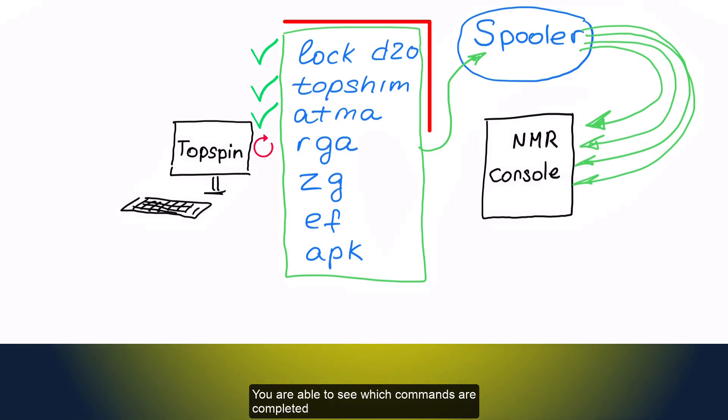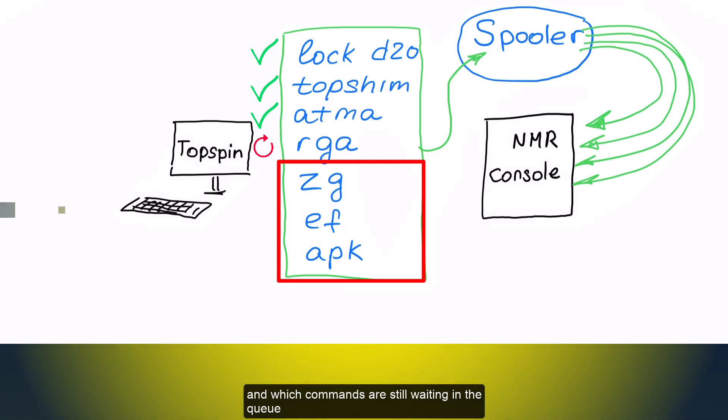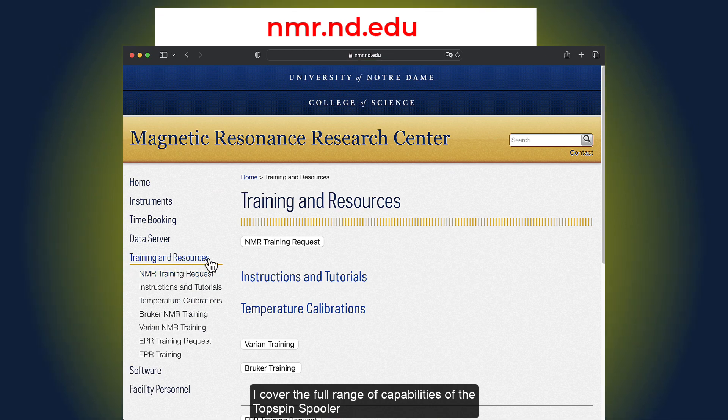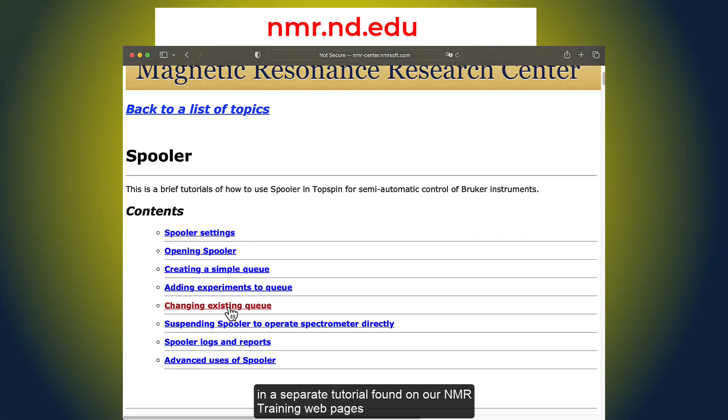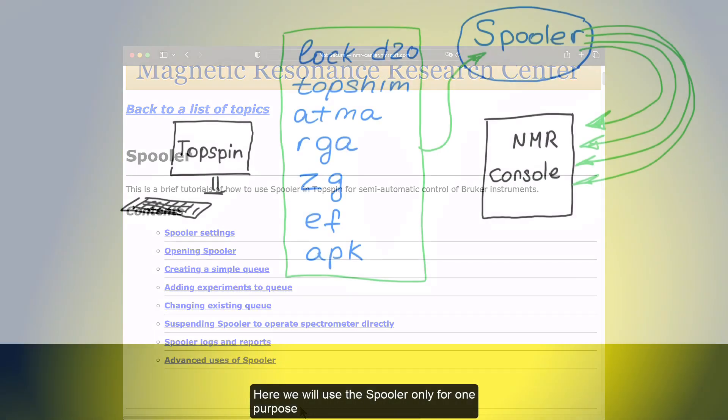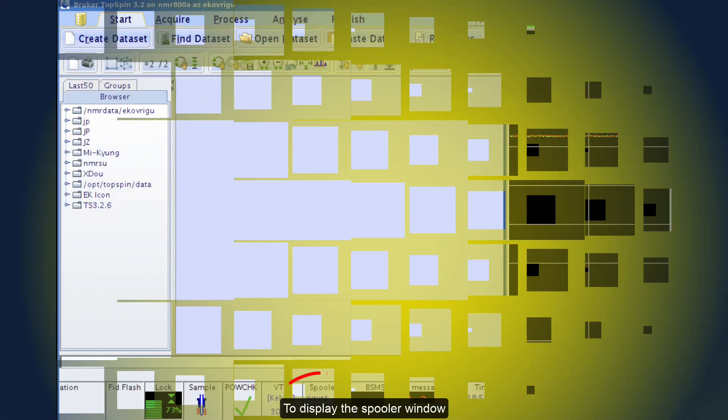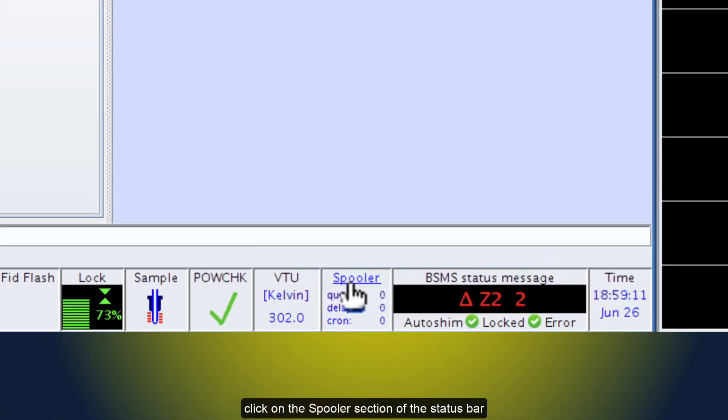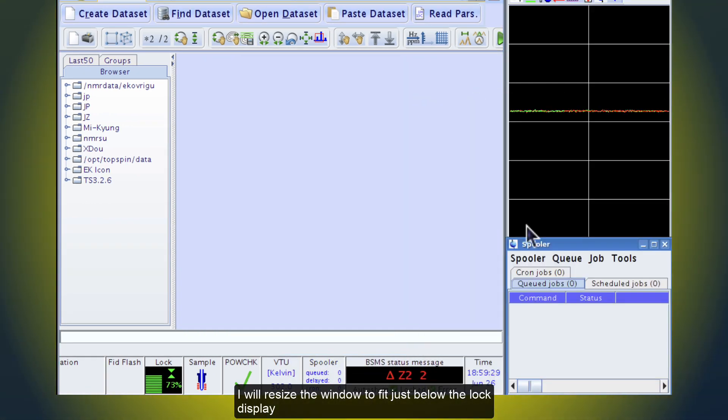You are able to see which commands are completed, which one is currently running, and which commands are still waiting in the queue. I cover the full range of capabilities of the Topspin spooler in a separate tutorial found on our NMR training web pages. Here we will use the spooler only for one purpose. We want to see the progress of tuning and matching and be certain when it is finished. To display the spooler window, click on the spooler section of the status bar. I will resize this window to fit just below the lock display.